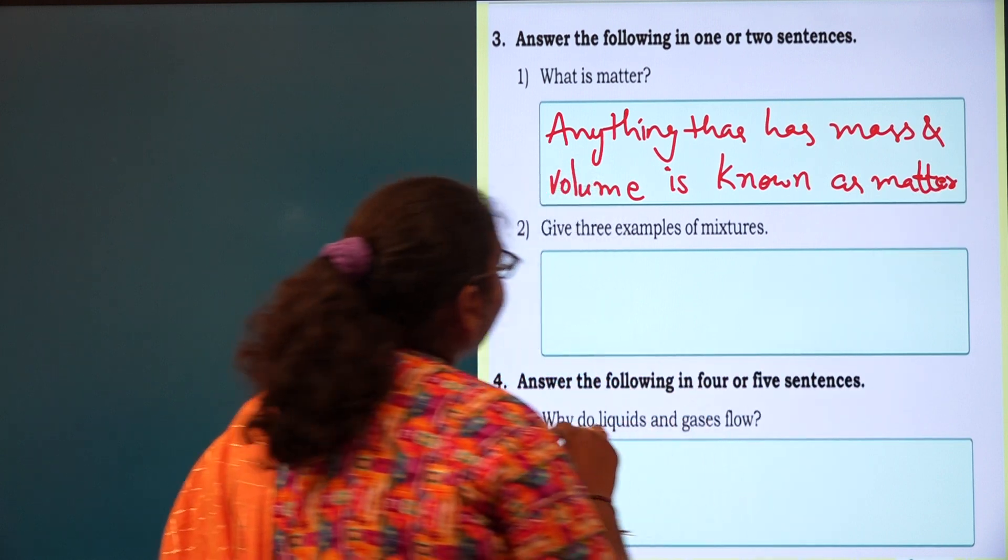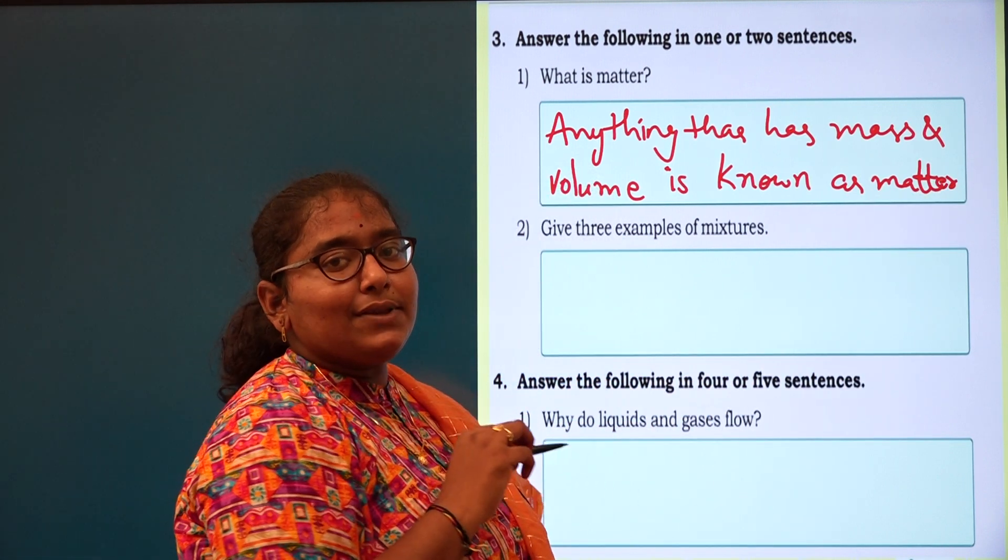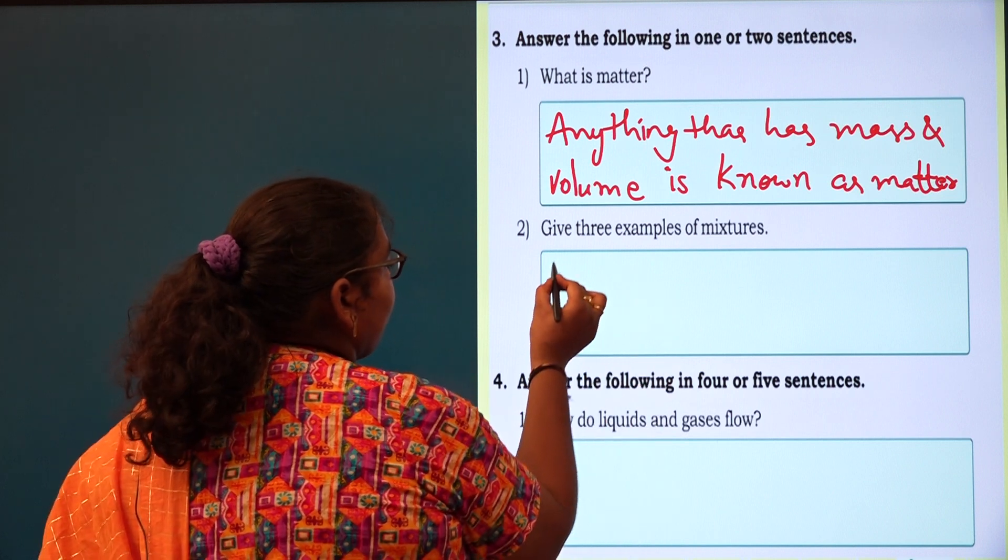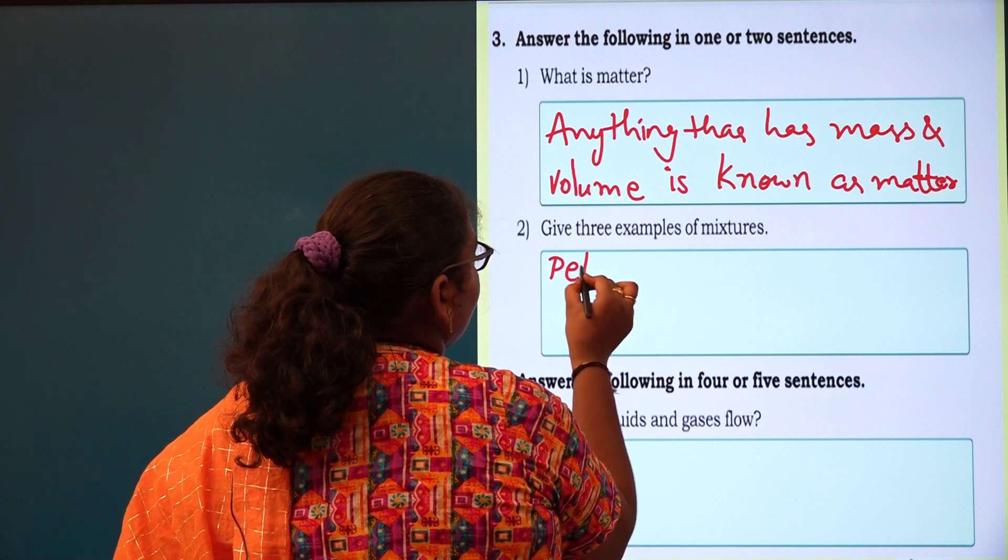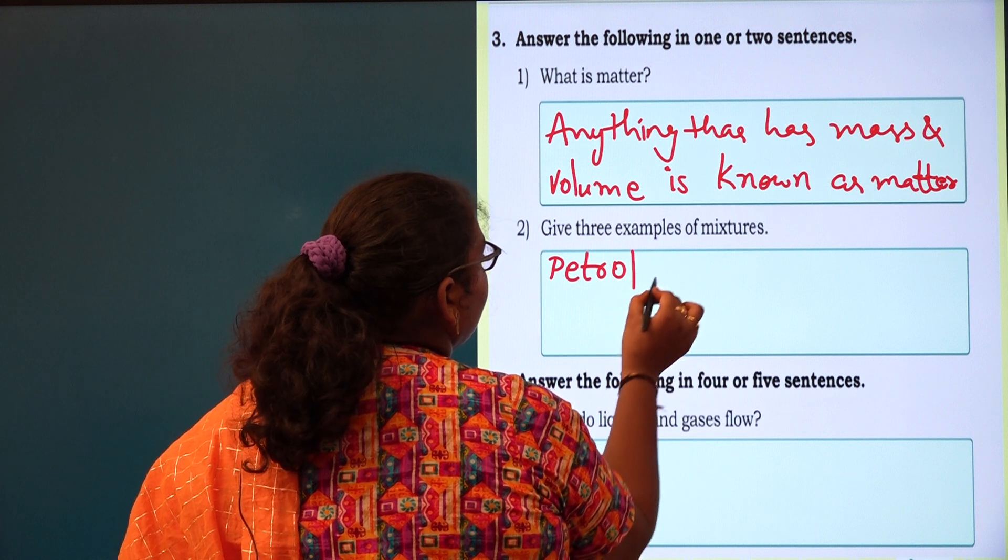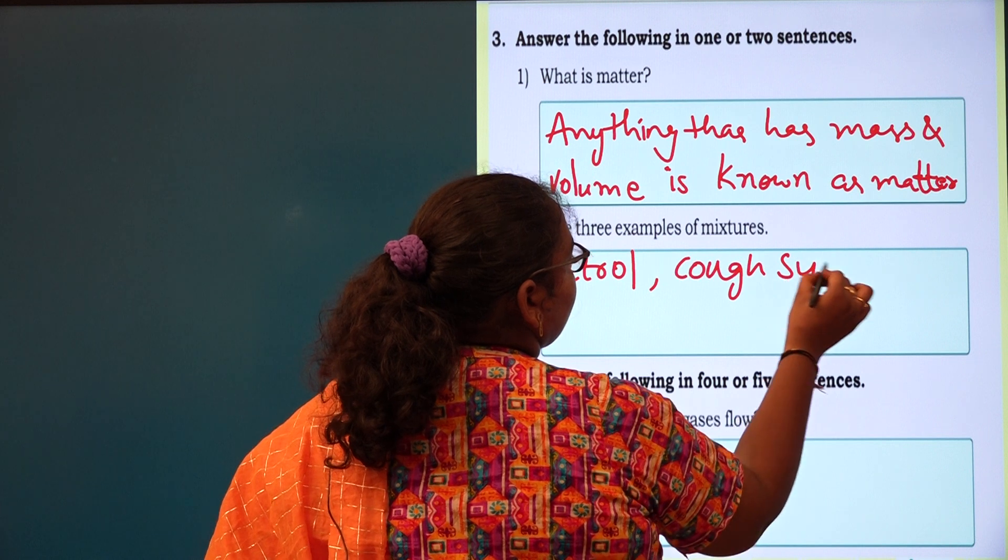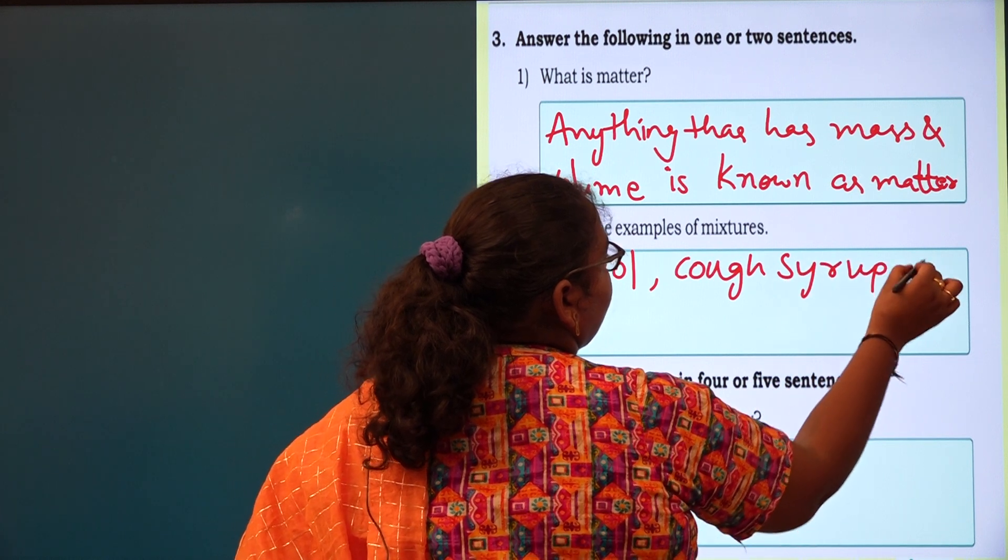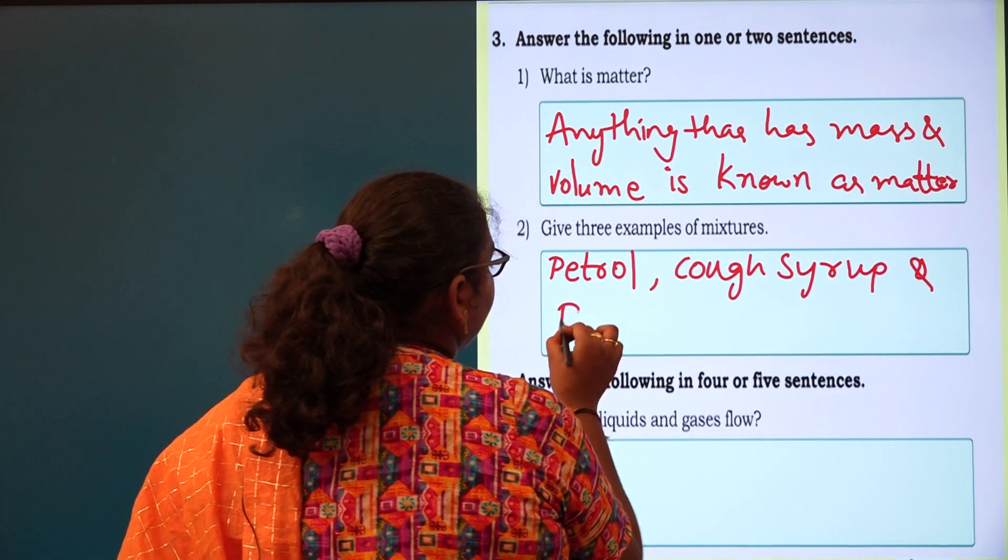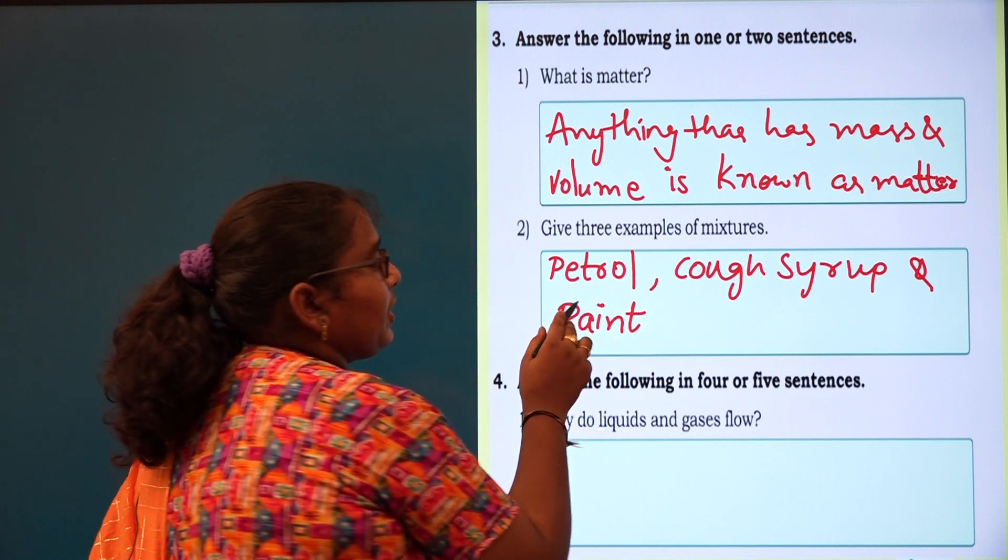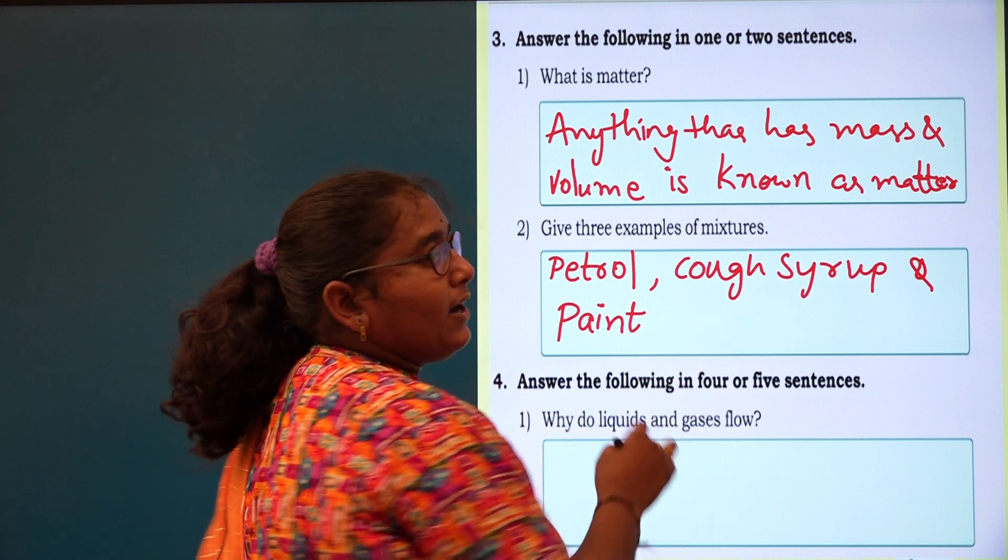Second one: give three examples of mixtures. What are the three examples? Petrol, cough syrup, and paint. What are the three examples of mixtures? Petrol, cough syrup, and paint.